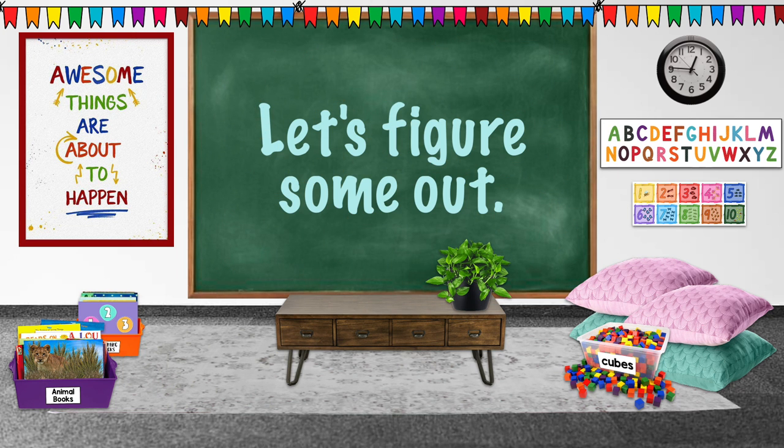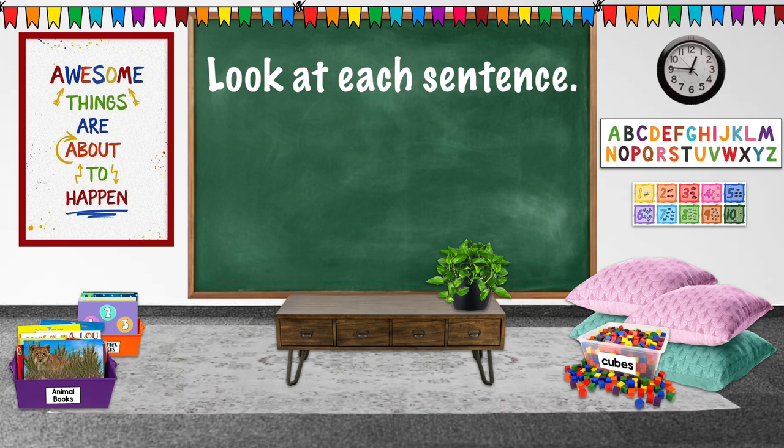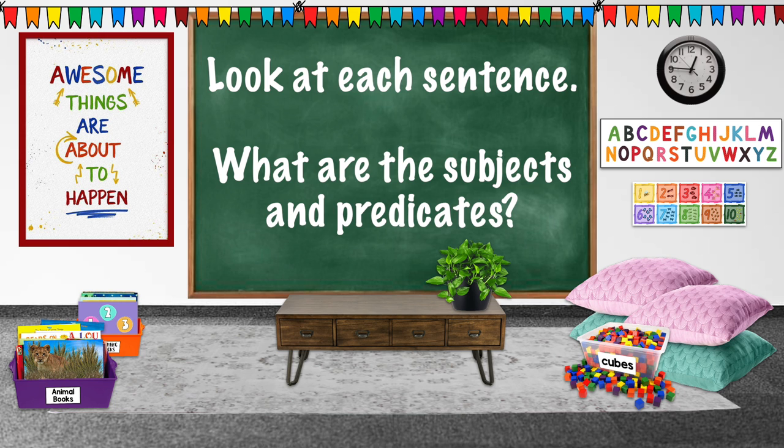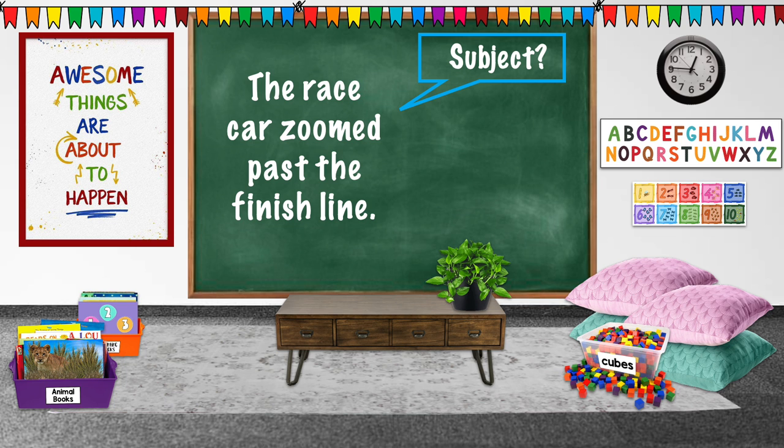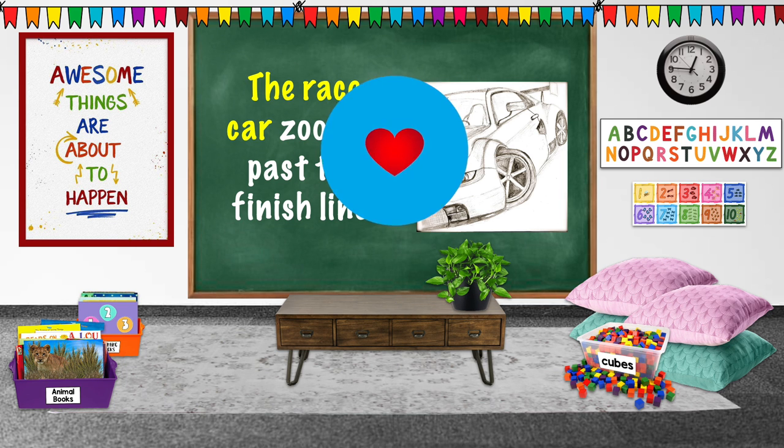Let's try and see if we can figure some out. Look at each sentence. What's the subject and the predicate in each? The race car zoomed past the finish line. Who or what is the sentence about? Did you say the race car? Right, that's our subject.